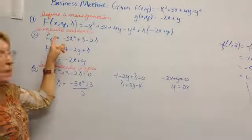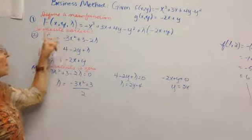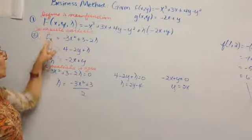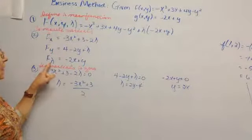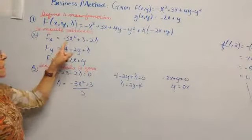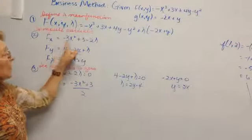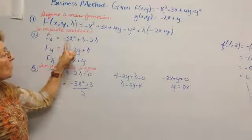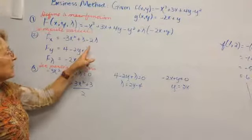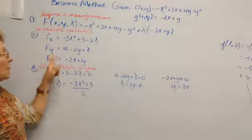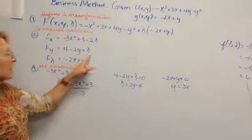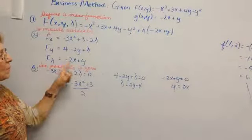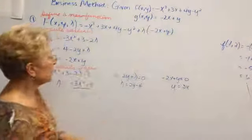And then the second step is to compute the partials, our F function with respect to x, y, and lambda. And we get these partials, minus 3x squared plus 3 minus 2 lambda for f sub x. f sub y is 4 minus 2y plus lambda. And f sub lambda looks pretty much like the constraint function.